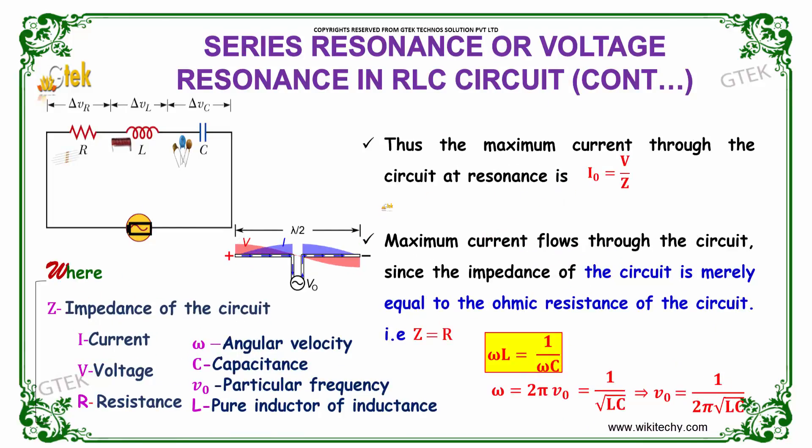Thus, the maximum current at resonance is I naught equals V by Z. Maximum current flows through the circuit since the impedance is merely equal to the ohmic resistance of the circuit, Z equals R, which indicates omega L equals 1 by omega C.